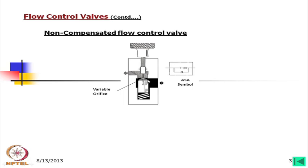Depending on the area, the flow will be throttled and there will be control of flow — the flow rate will reduce or increase depending on the orifice area allowed. On the other hand, if flow comes from the left side, it can go to the other side by moving this poppet against the spring. As shown in the symbol, when flow comes from the left side it goes through the throttle valve, whereas when flow comes from the right side it goes through the check valve.